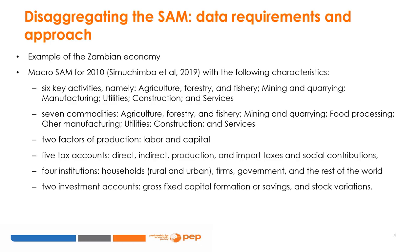The SAM also contains two factors of production — labor and capital — five tax accounts: direct, indirect, production, and import taxes, and social contributions; four institutions: households (rural and urban), firms, government, and the rest of the world; and two investment accounts: gross fixed capital formation or savings, and stock variations.